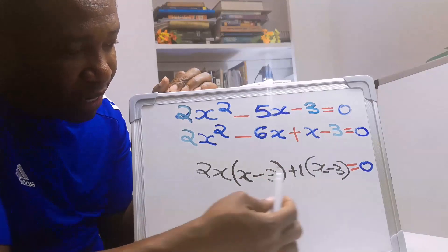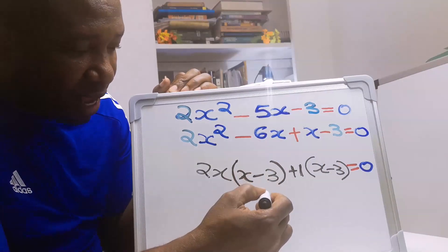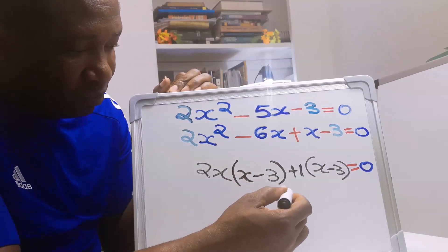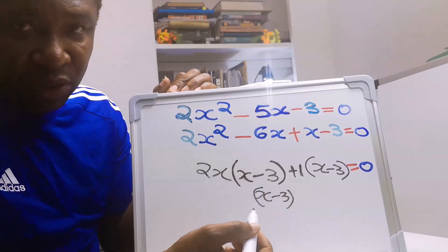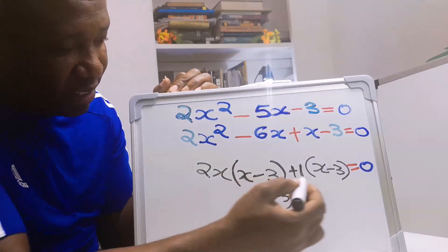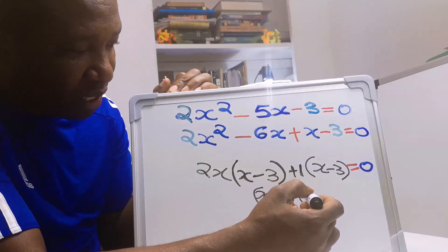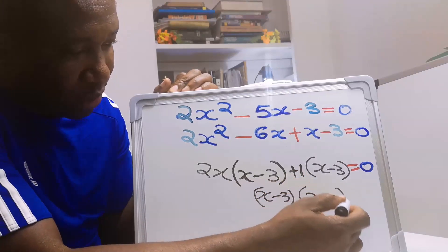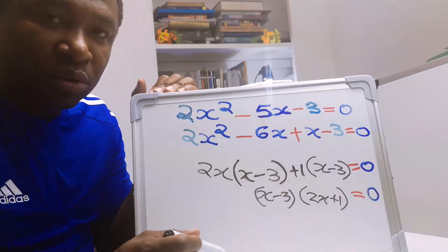Next, these two brackets are the same. Hence, I will just take one of the brackets which is x minus 3, and whatsoever that is outside the brackets which is 2x plus 1. And this is equals 0.